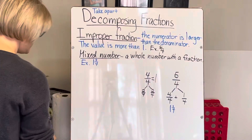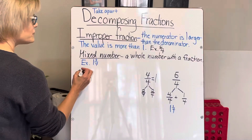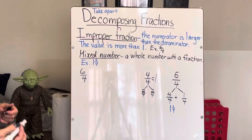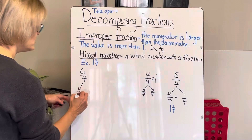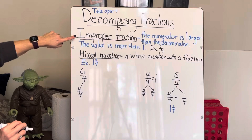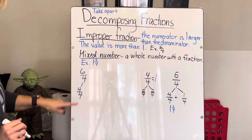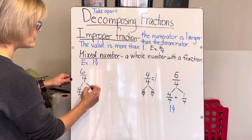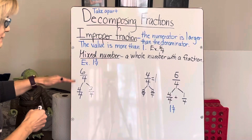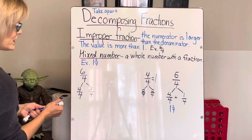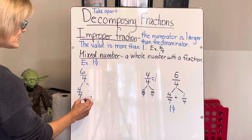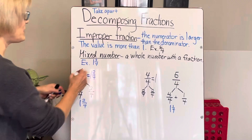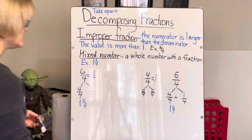What about six-fourths? Again, to make that into a mixed number, I pull out the whole. Six-fourths is an improper fraction with a value of more than one. I pull out four-fourths, which is one whole, and I still have two-fourths left over. So I've got one whole and two-fourths — one and two-fourths is the same as six-fourths.